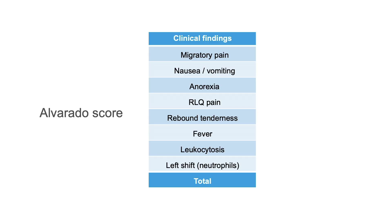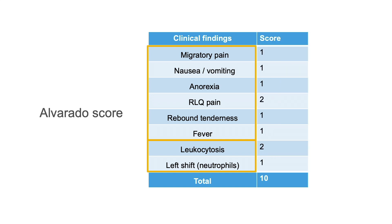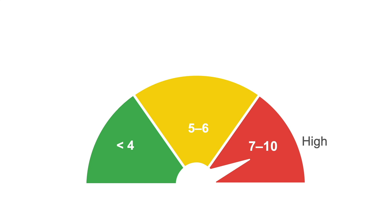Remember that acute appendicitis is a clinical diagnosis. The Alvarado score is a clinical scoring system for determining the probability of appendicitis. It is based on the presence or absence of six clinical findings and two laboratory findings, giving each a weighted score with a maximum total of 10. The categories are based on low, moderate, and high probability. A score of 7 to 10 indicates a high probability of appendicitis. These patients have up to a 93% probability of acute appendicitis and usually require surgical treatment or non-operative definitive treatment with antibiotics.